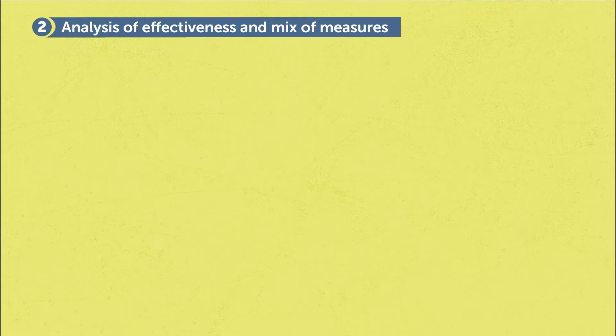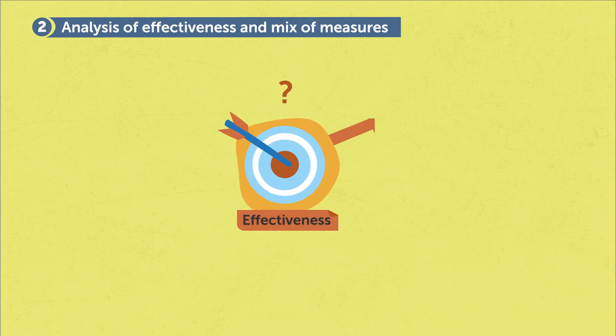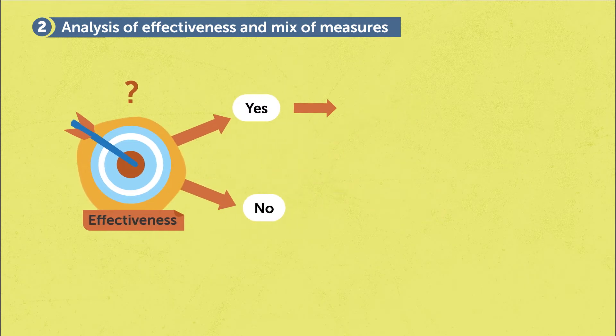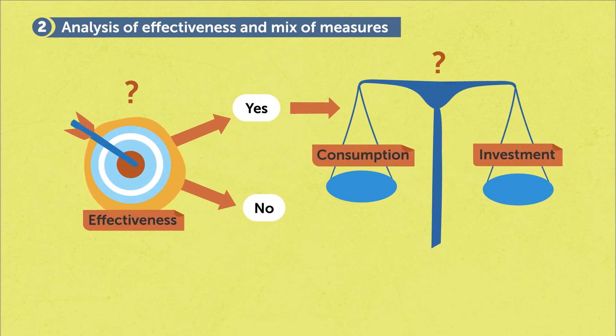So the question is: is your sacrifice effective? And the second question is, given that it is effective, how should I mix between the two different channels?